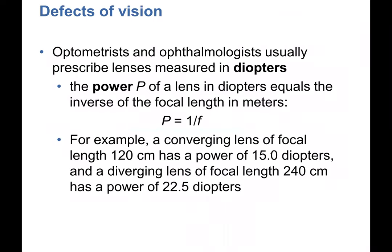For the eye, we use diopters as the unit for the power of a lens. Power equals 1 over the focal length (in meters). A converging lens of focal length 120 cm has a power of 15 diopters. A diverging lens of focal length 240 cm has a power of 22.5 diopters. Reading glasses are specified by their power in diopters.